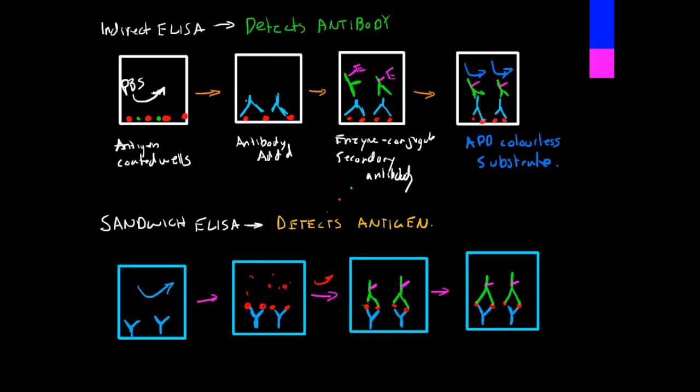And then you add your substrate and measure the color once again. So this one, you're detecting your specific antigen. So there is a difference there. So you use your sandwich ELISA when you want to look for an antigen, and you use your indirect ELISA when you want to detect an antibody.